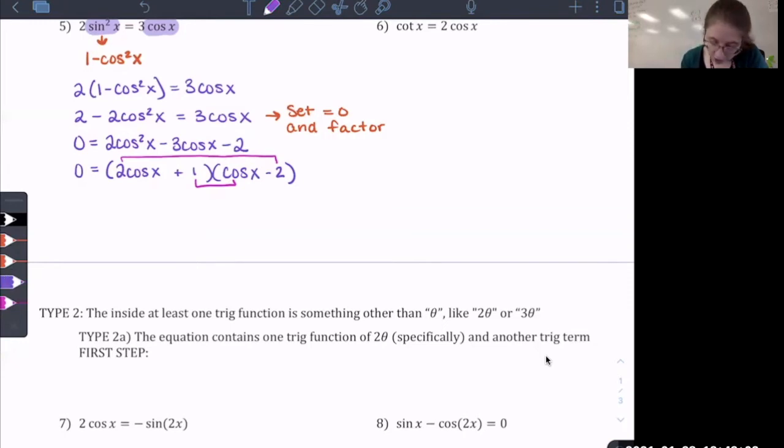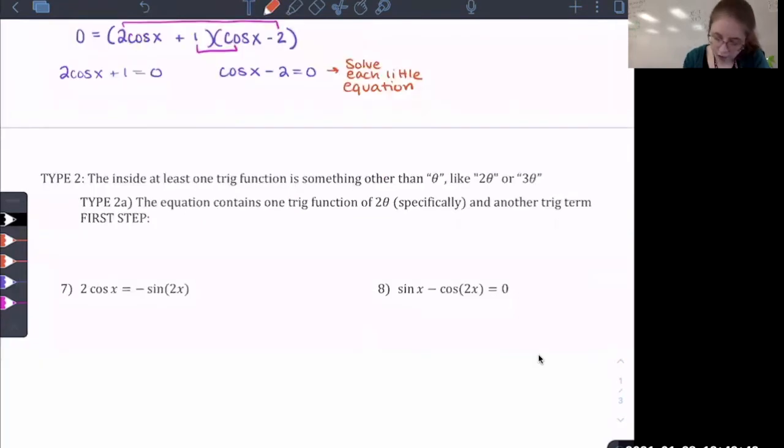Once I have it factored, then my next step is to set each factor equal to 0, basically creating two mini equations. So I have 2 cosine x plus 1 equals 0, and then cosine x minus 2 equals 0. And now I'm just going to take a second to solve each of these little equations. For my first one, if I isolate the cosine, I'm going to get that cosine x equals negative 1 half. And if I just draw a little picture to help myself visualize this, I know that cosine is negative in the second quadrant and the third quadrant, so I'm going to get two answers.